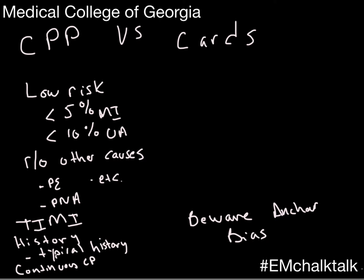If you put somebody on the chest pain pathway, that's what they're getting evaluated for, and it's really hard for nurses or the next clinician to work through a different diagnosis that comes up. For example, if the official read on the chest X-ray comes back as pneumonia, most emergency physicians or hospitalists carrying on are either not going to see that extra diagnosis or they're still going to proceed with a stress test — even though it was probably the pneumonia causing the pain.